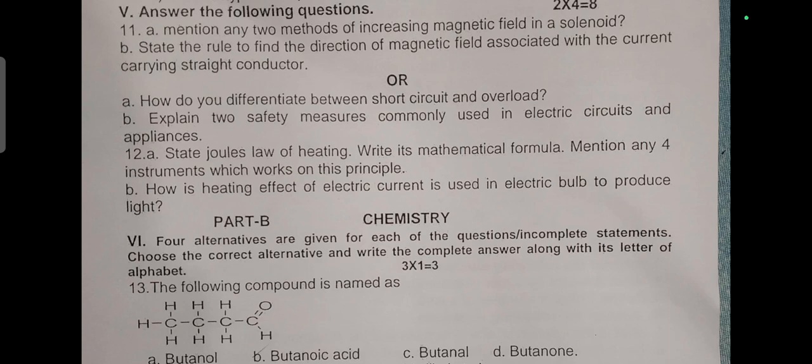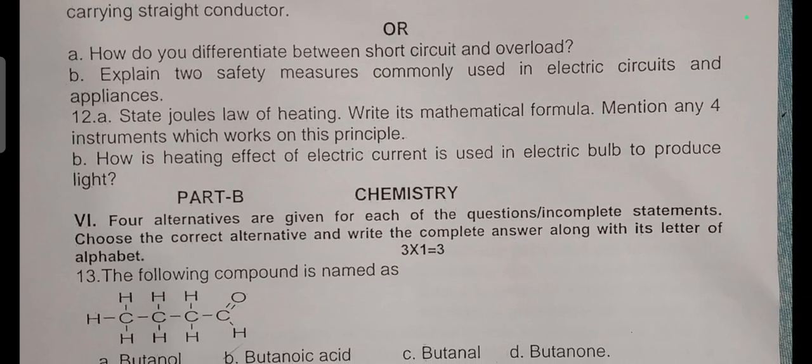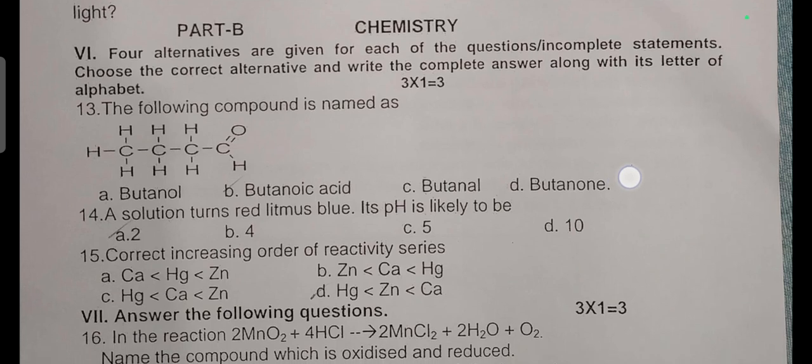Answer the following questions for four marks. Mention any two methods of increasing magnetic field in a solenoid. State the rule to find the direction of magnetic field associated with the current carrying straight conductor. How do you differentiate between short circuit and overload? Explain two safety measures commonly used in electric circuits and appliances. State Joule's law of heating, write its mathematical formula. Mention any four instruments which work on this principle. How is the heating effect of electric current used in electrical bulbs to produce light? This is Part A Physics.